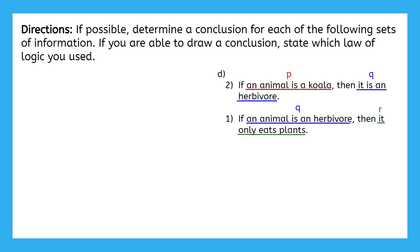Ah, yes, that's what I wanted. P implies Q, Q implies R. That is the law of syllogism to a T. Now we can conclude P implies R using the law of syllogism. What does that look like for these specific statements? If an animal is a koala, then it only eats plants.